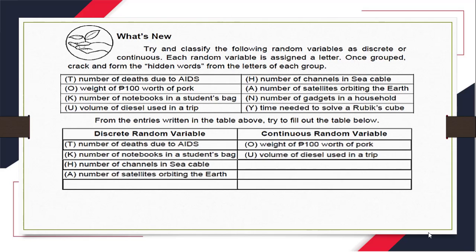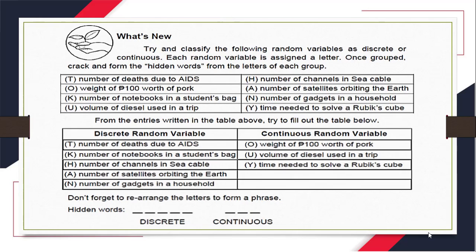Now, let us have the number of gadgets in a household. That is discrete. And lastly, we have Y: time needed to solve a Rubik's Cube. Is it discrete or continuous? It is continuous. So, we have now classified the variables as discrete and continuous. We need to crack and form the hidden words. Don't forget to rearrange the letters to form a phrase. The discrete group is a five-letter word and the continuous group is a three-letter word.